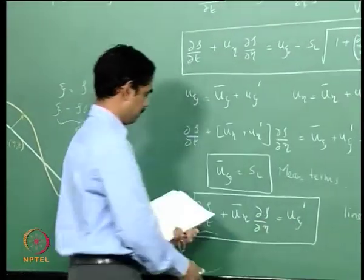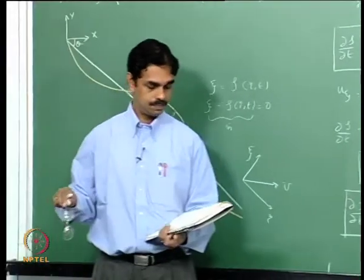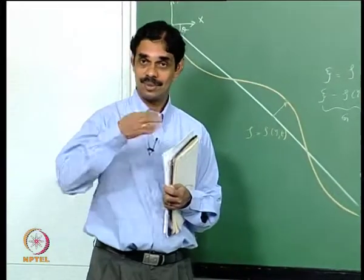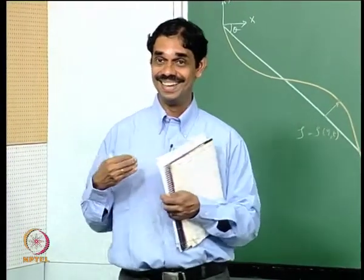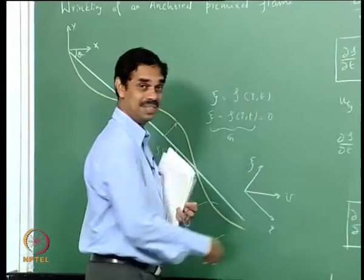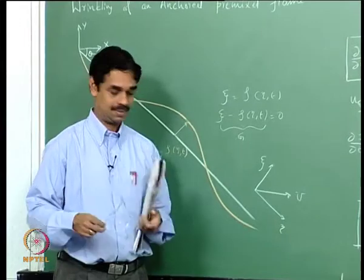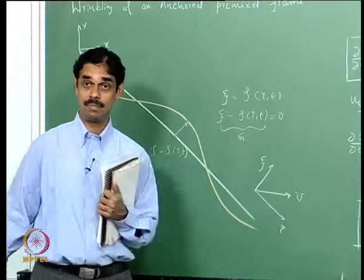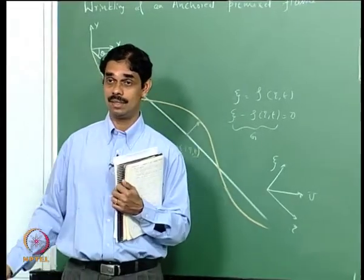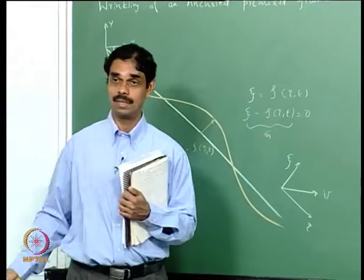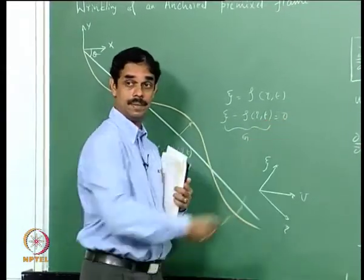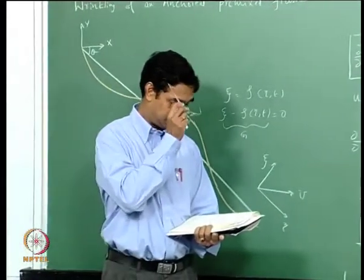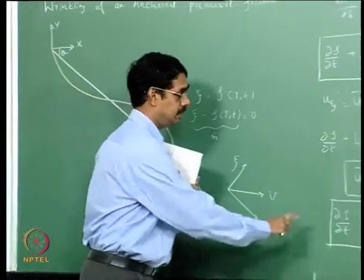We subtract the mean and drop the non-linear terms to get the linearized equation. This is a linear equation. We have removed the mean terms, linearized, and dropped the product of two small quantities u_eta prime times partial zeta prime by partial eta. The forcing term u_psi prime is the velocity component in a direction normal to the main flame shape.